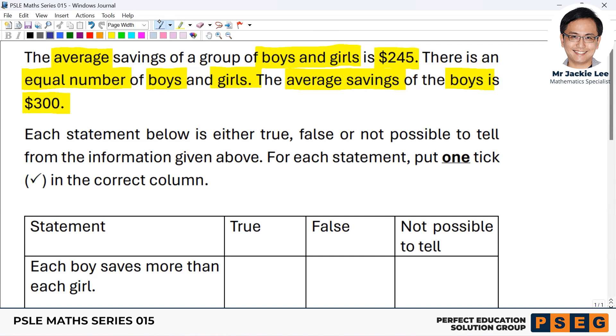First of all, I think we have to have a good concept on the average first. The average in fact should be the sum divided by the total number. To get the sum, in fact, is average times the number. The sum is average times the number.